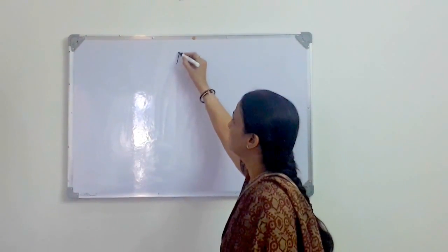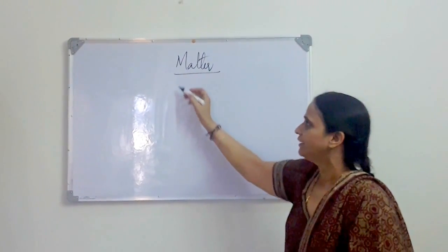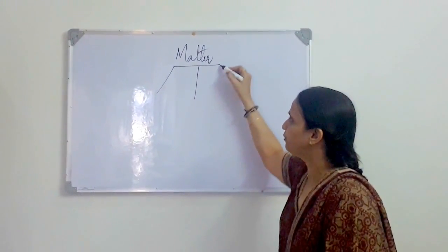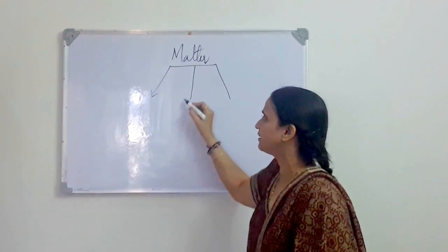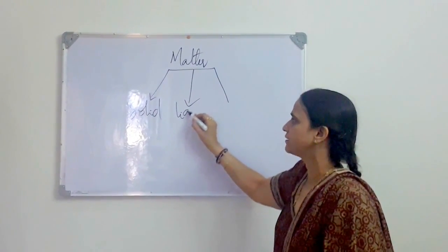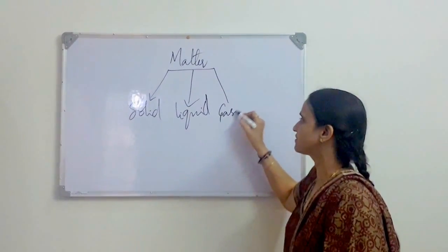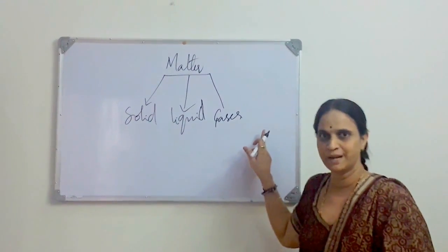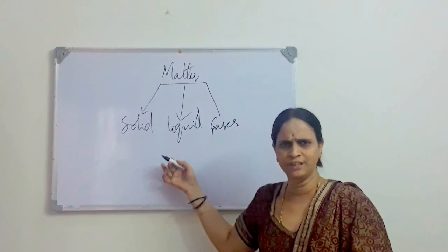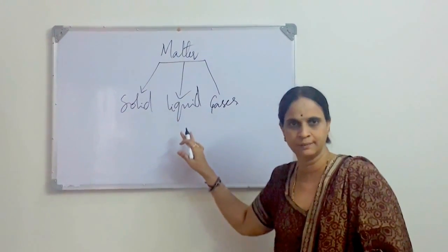Matter, we all have learned, is made up of three kinds: solid, liquid, and gases. These three kinds of matter we knew from class 3rd and 4th onwards.